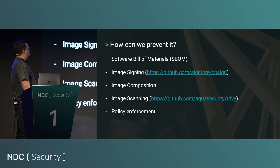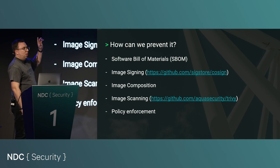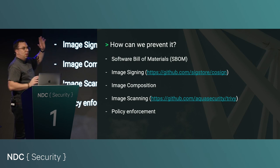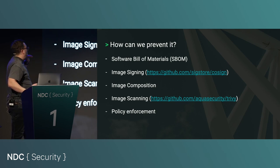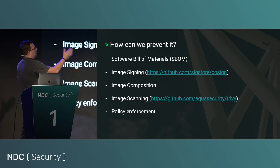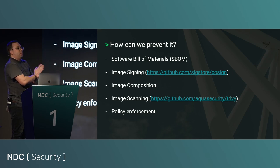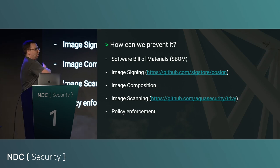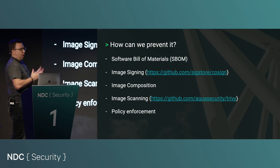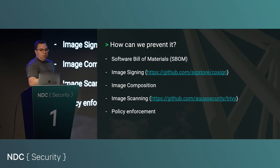How many of you are scanning your images? How many have a policy to make sure an image can't get into production if it doesn't conform to some standard? All the hands go down. We need to make sure this isn't just a tick-box exercise — and that's where policy enforcement comes in. At the entry door to Kubernetes, we can check that an image doesn't have any critical CVEs; if it does, kick it back. OPA Gatekeeper becomes a powerful mechanism to stop bad images from entering Kubernetes.